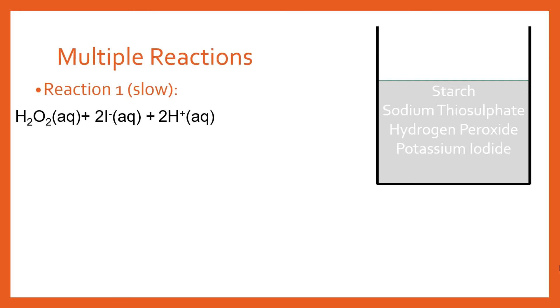So those iodine ions are going to react with the hydrogen peroxide and you've also got some aqueous H+ ions and that's going to end up producing simply water and then you're getting this I2.